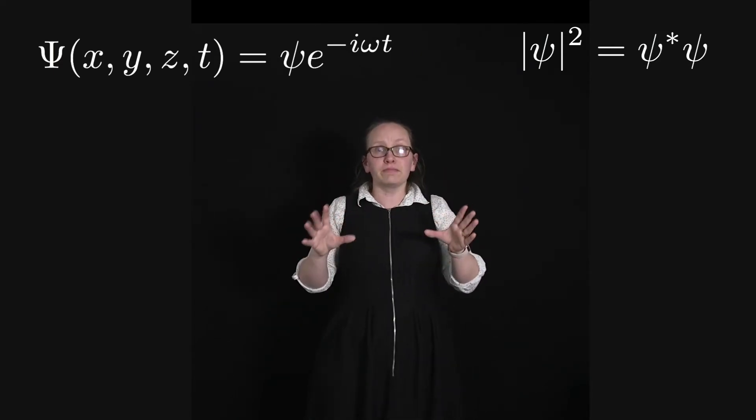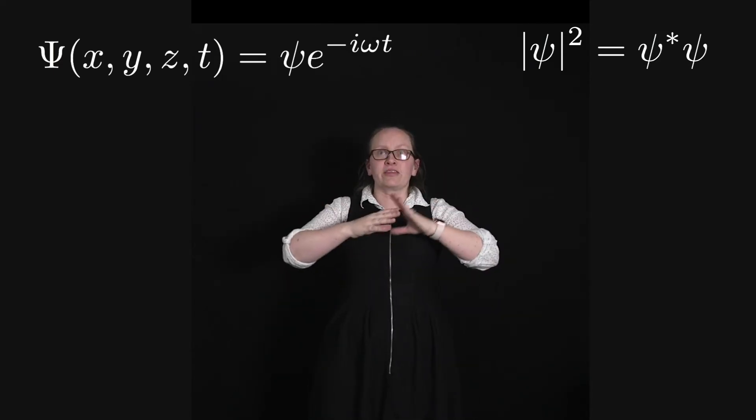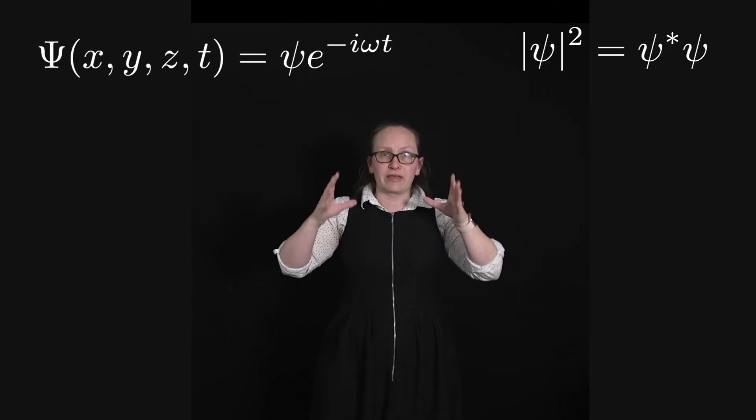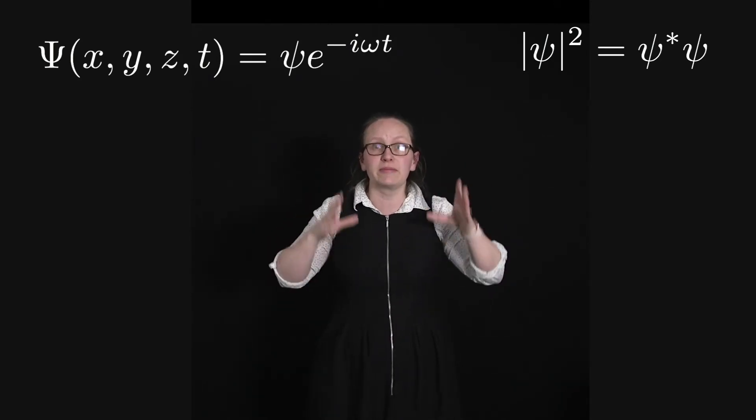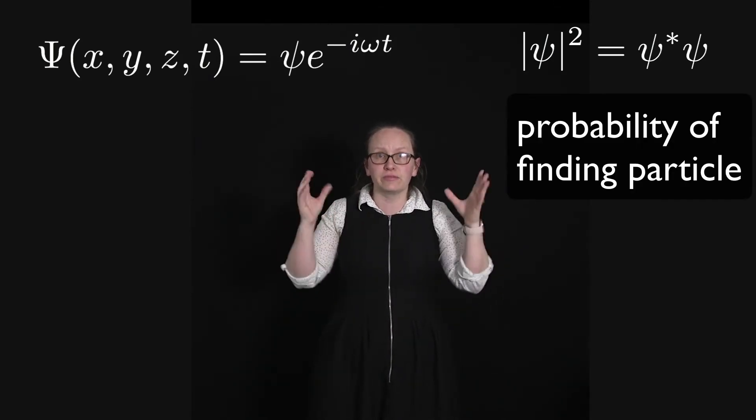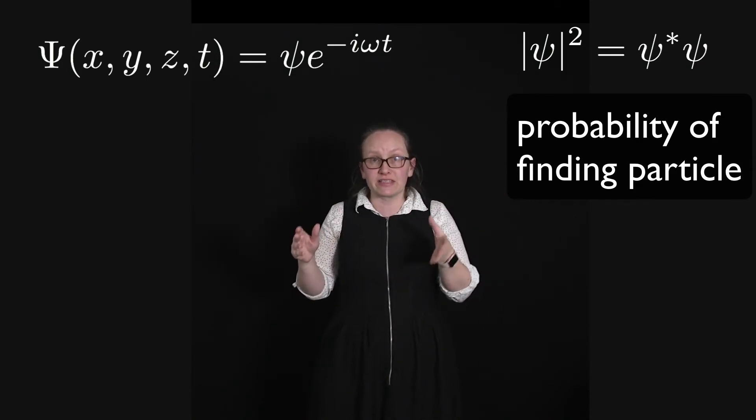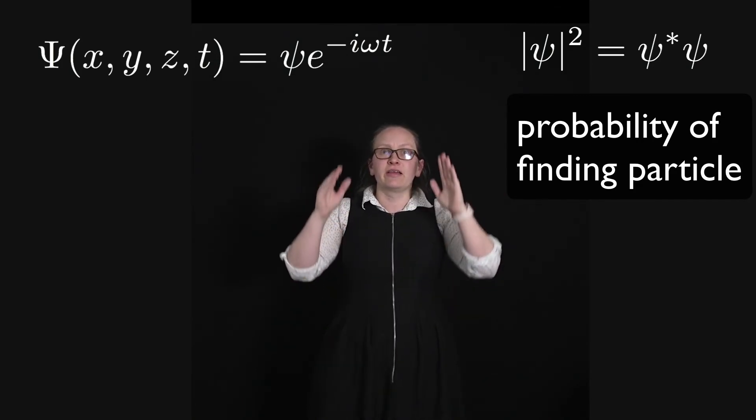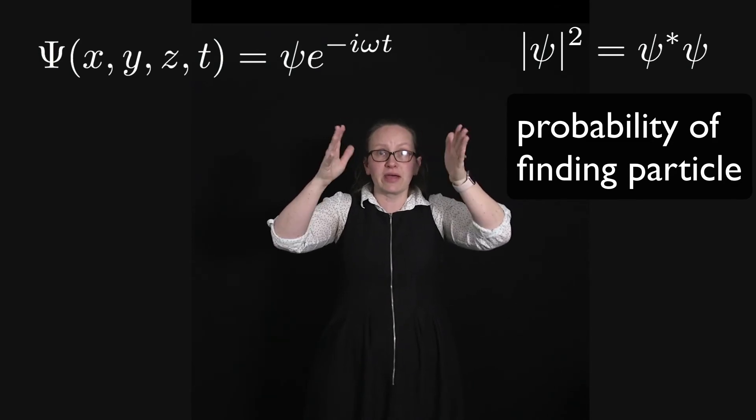Okay, so the important point there was that the only thing that we can measure physically is the probability of finding the particle within a specified volume and within a specified time, and that's given by modulus of Psi squared which is equal to Psi star Psi.